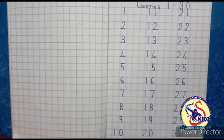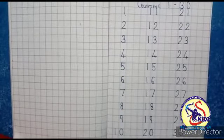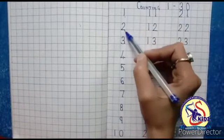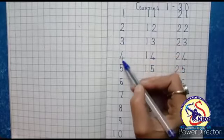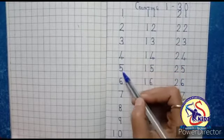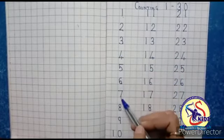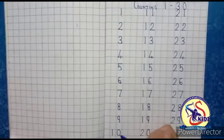Now, let's revise the counting again. One, two, three, four, five, six, seven, eight, nine, 10,